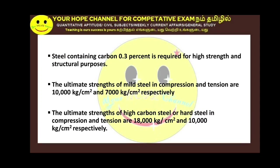Steel with 0.3% carbon content has very high strength for structural purposes. Mild steel with 0.25% carbon content is preferred for construction purposes. When carbon is very low it will be used for measurement. For carbon content of 1.3%, we have high carbon steel. Ultimate strength of mild steel: compression is 10,000 kg/cm², tension is 7,000 kg/cm².